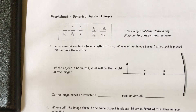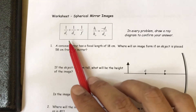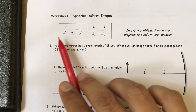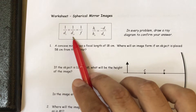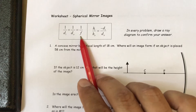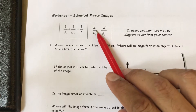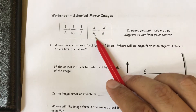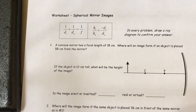Don't forget to subscribe, like, and comment. This is the formula for spherical mirror image: 1 divided by d-i plus 1 divided by d-o equals 1 over f, where d-i is distance of image, d-o is distance of object, and f is focal length. Then the ratio of h-i to h-o — h-i is height of image, h-o is height of object — equals negative d-i divided by d-o.